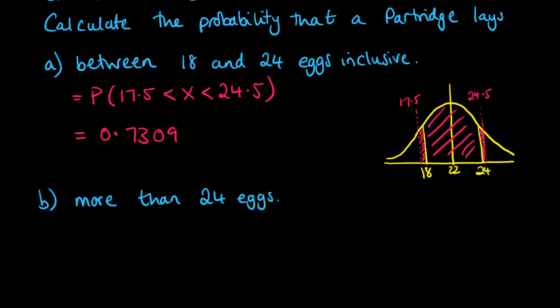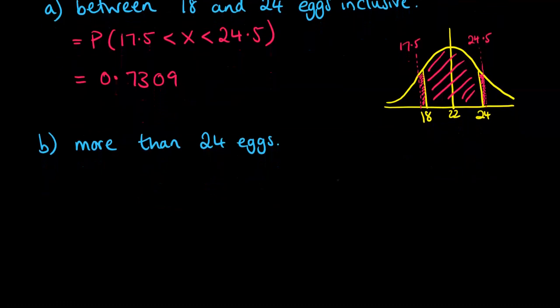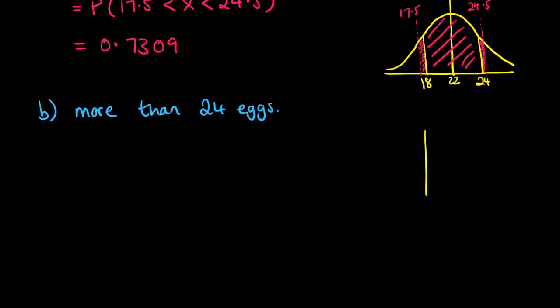OK, more than does not include 24. So when we're doing our little picture, we need to think about which way we go from 24. So here's our diagram. Well, that wasn't a very good curve. Here we go. Here's our diagram. Here's 24.